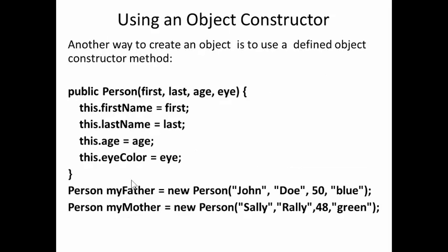We can define our own object constructors. So for example, I can have a public Person constructor with four parameters: first, last, age, and eye. And the next four lines simply define the four variables in the person object. So they take the parameters first, last, age, and eye, and assign them to the corresponding person object variables.